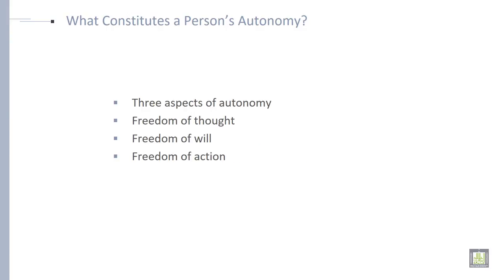What constitutes a person's autonomy? There are three concepts of autonomy: freedom of thought, freedom of will, and freedom of action. These three freedoms constitute a person's autonomy.